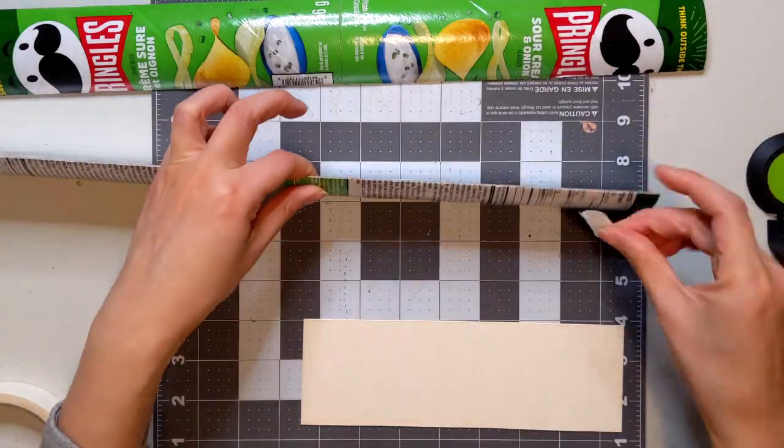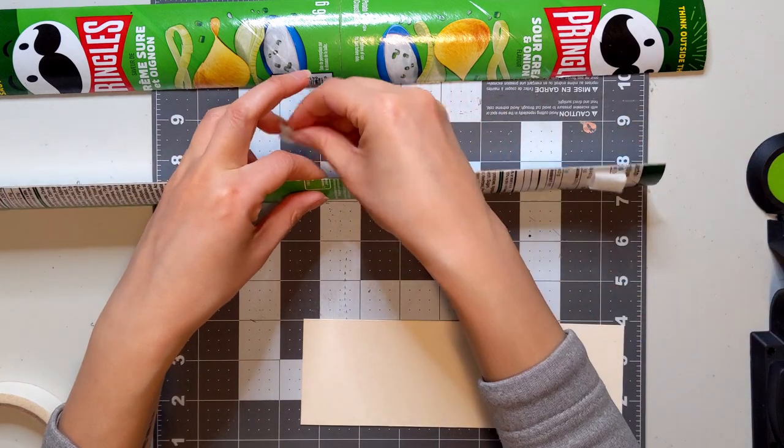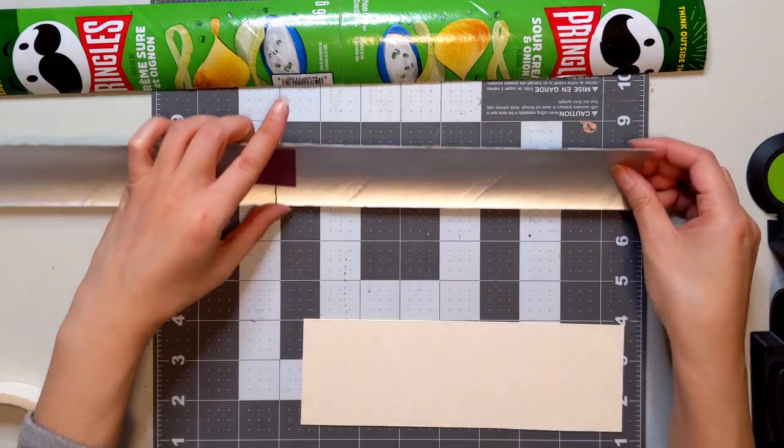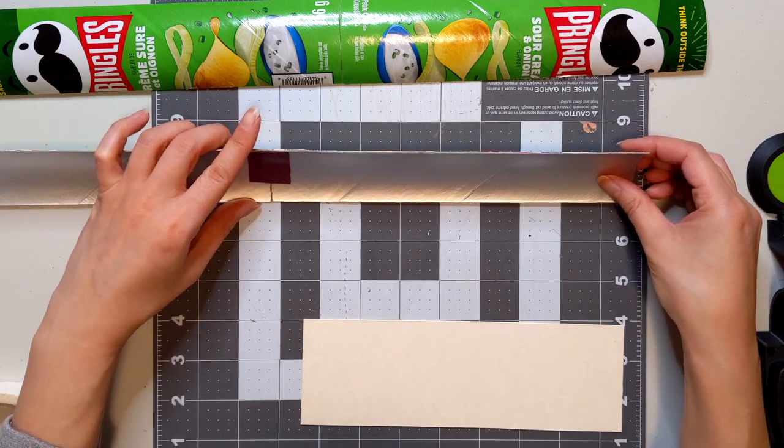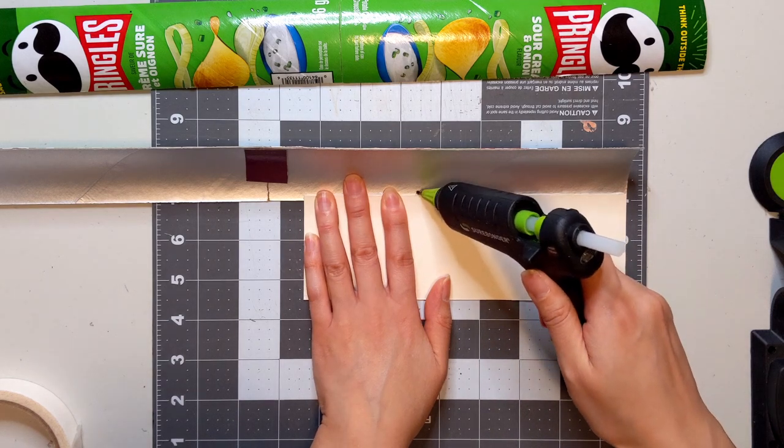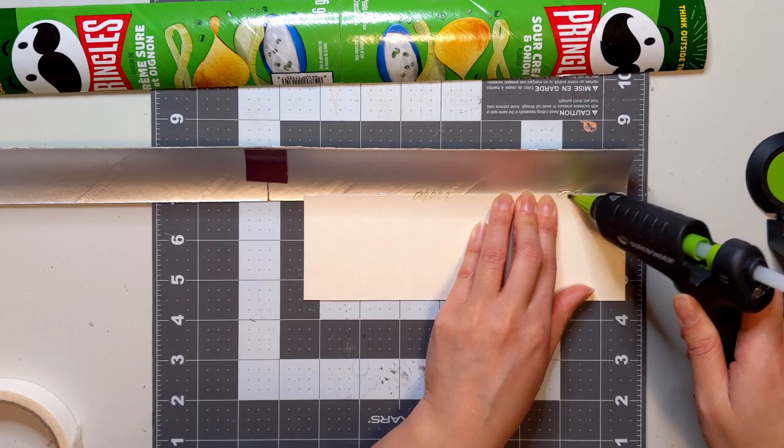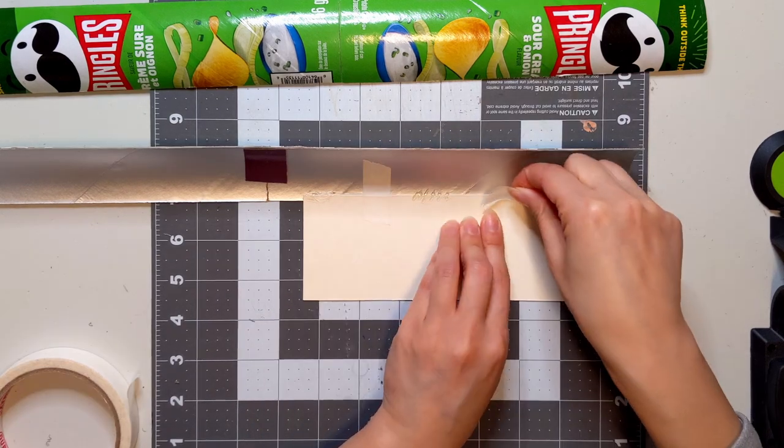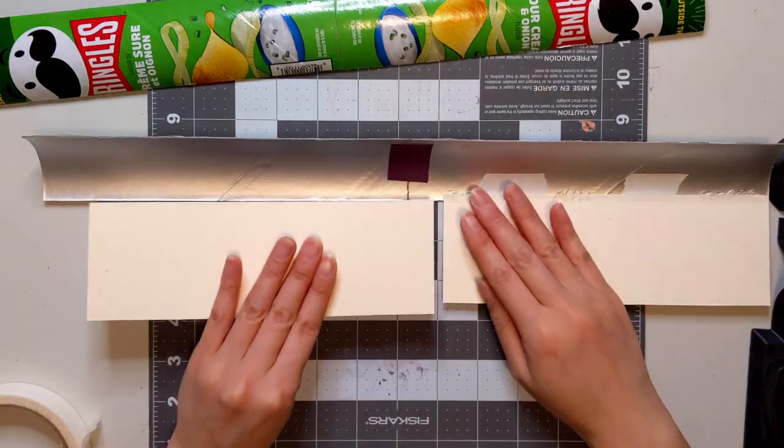I wanted the walls to be consistently two and a half inches tall, so I taped the edge of the roof along a measurement line on my cutting mat, which allowed me to then align the bottom of the wall section along another measurement line exactly two and a half inches below. Then glue in place, and tape, and tape, and also more tape.